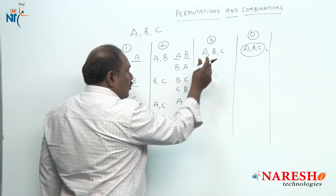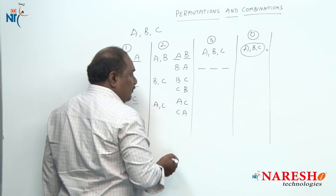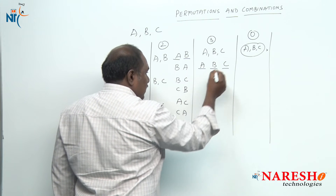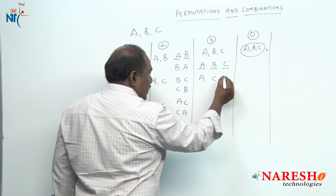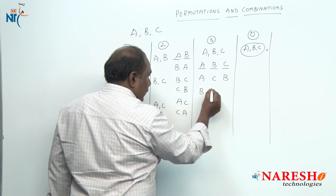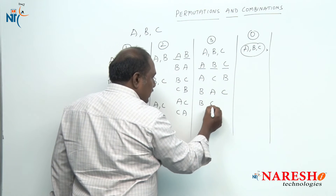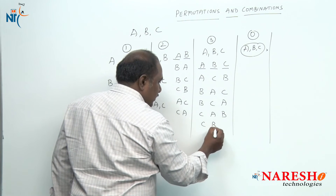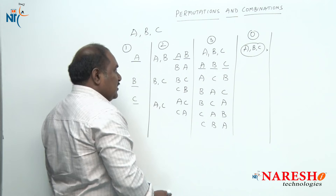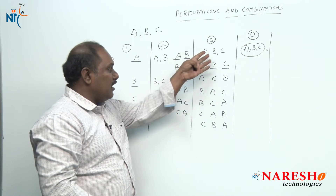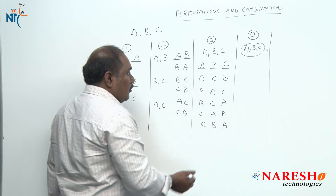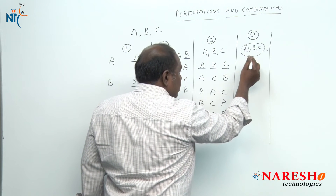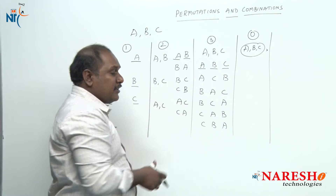If all three friends go to the movie, three places are available. In how many ways can they sit? The arrangements are: ABC, ACB, BAC, BCA, CAB, CBA — six different ways. If they do not have any ticket, not selecting anything is one selection, and not arranging anything is also one arrangement.